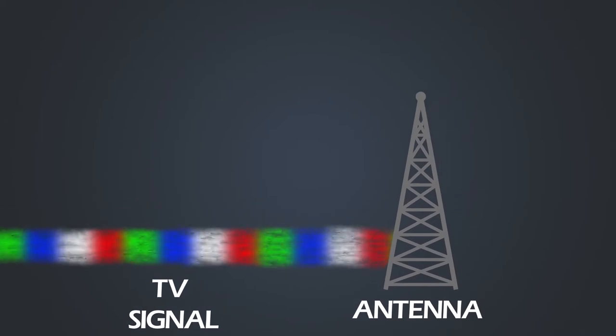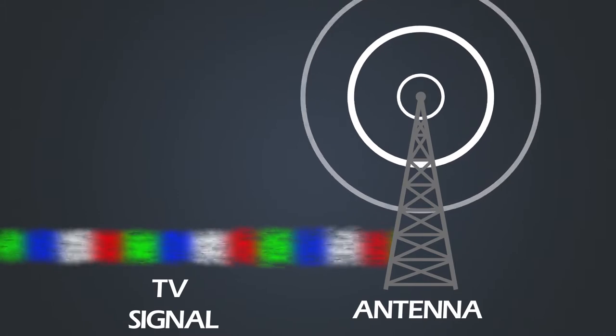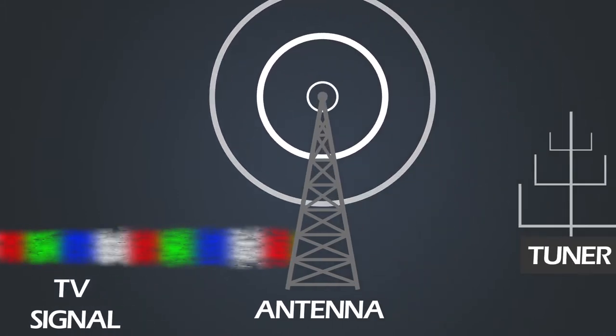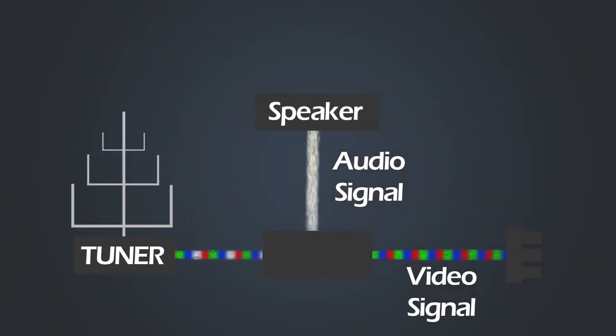This will then go to the antenna where the antenna broadcasts electromagnetic waves at different frequencies depending on what channel you want to watch. These will then get broadcast and picked up by your aerial which has a tuner and whichever channel you choose the tuner will tune into different frequencies.